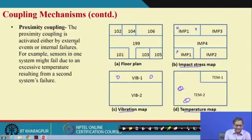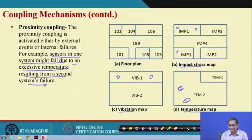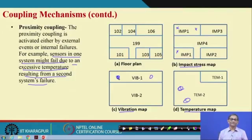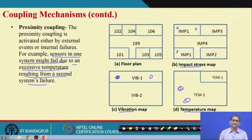Proximity coupling is activated by external or internal failures. For example, sensors in one system might fail due to excessive temperature resulting from a second system's failure. If a sensor is vibration-dependent and another piece of equipment causes vibration, the sensor is affected by that vibration source. That kind of coupling is known as proximity coupling.